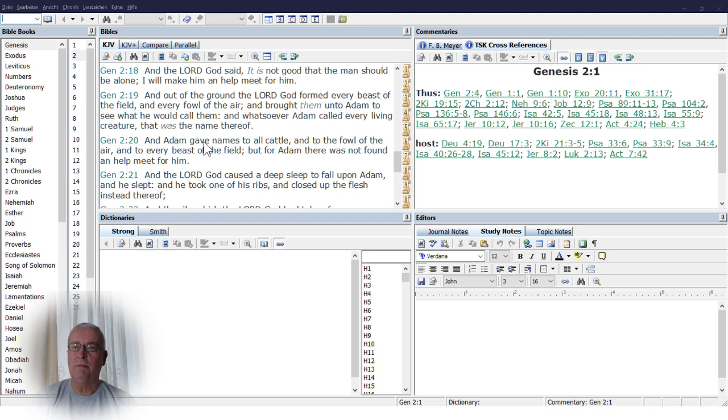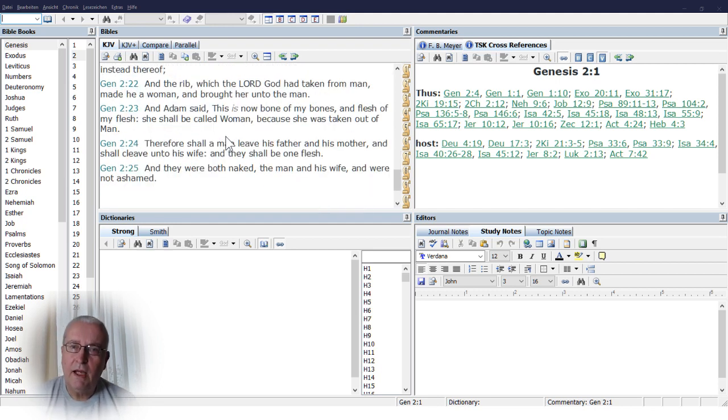And the Lord God caused a deep sleep to fall upon Adam. And he slept. And he took one of his ribs and closed up his flesh instead thereof. And the rib which the Lord God had taken from man, made he a woman, and brought her unto the man. And Adam said, This is now bone of my bones, and flesh of my flesh. She shall be called woman, because she was taken out of man. Therefore shall a man leave his father and his mother, and shall cleave unto his wife, and they shall be one flesh. And they were both naked, the man and his wife, and were not ashamed.